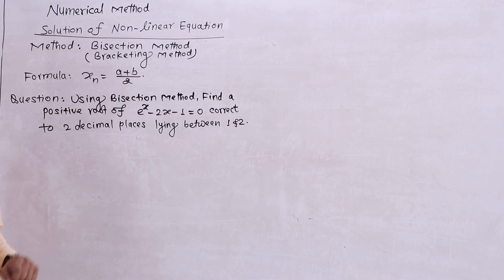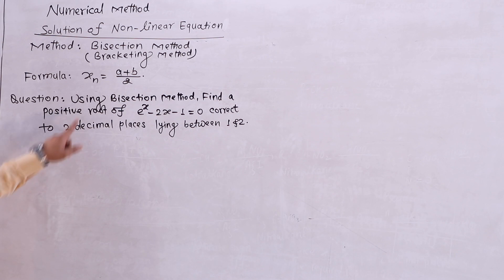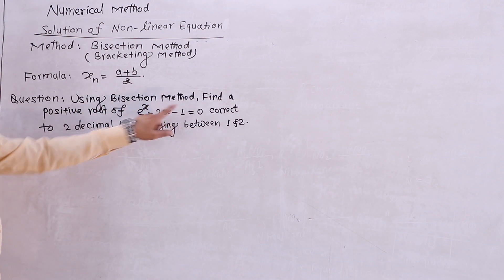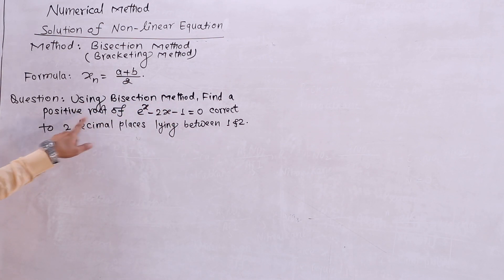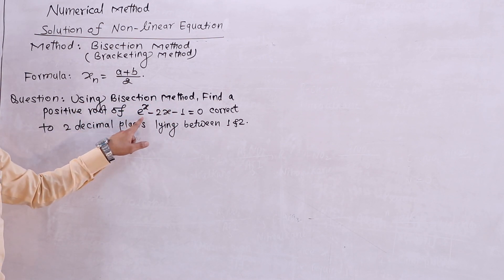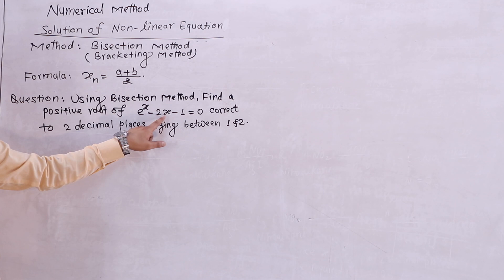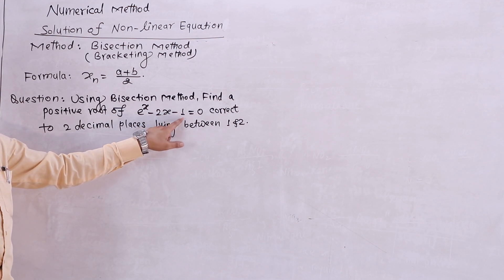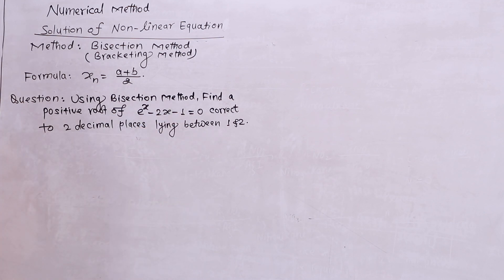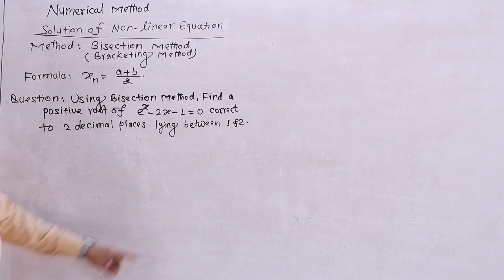I will use the bisection method to find a positive root of e^x minus 2x minus 1 equals 0, correct to two decimal places. The root is lying between 1 and 2.